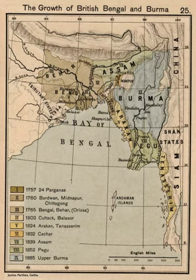Eastern Bengal and Assam was an administrative subdivision of the British Raj between 1905 and 1912. Headquartered in the city of Dhaka, it covered territories in what are now Bangladesh, northeast India and northern West Bengal.